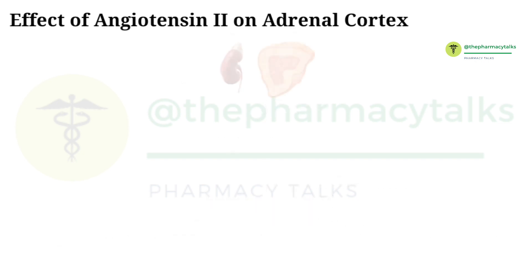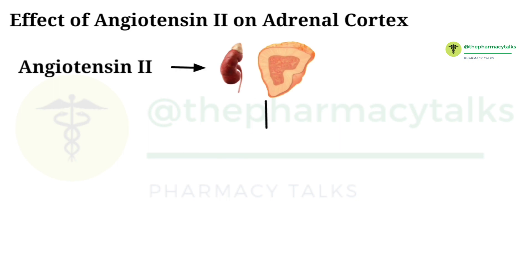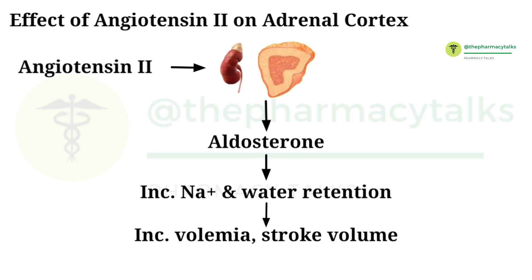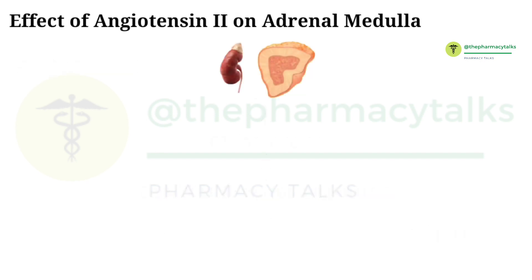In the adrenal cortex, angiotensin-2 stimulates the release of aldosterone. Aldosterone is a steroid hormone secreted by the adrenal glands. Its main role is to regulate salt and water in the body, thus affecting blood pressure. In abnormal conditions, aldosterone increases sodium and water retention, thereby increasing blood volume and stroke volume, which increases cardiac output and raises arterial blood pressure.